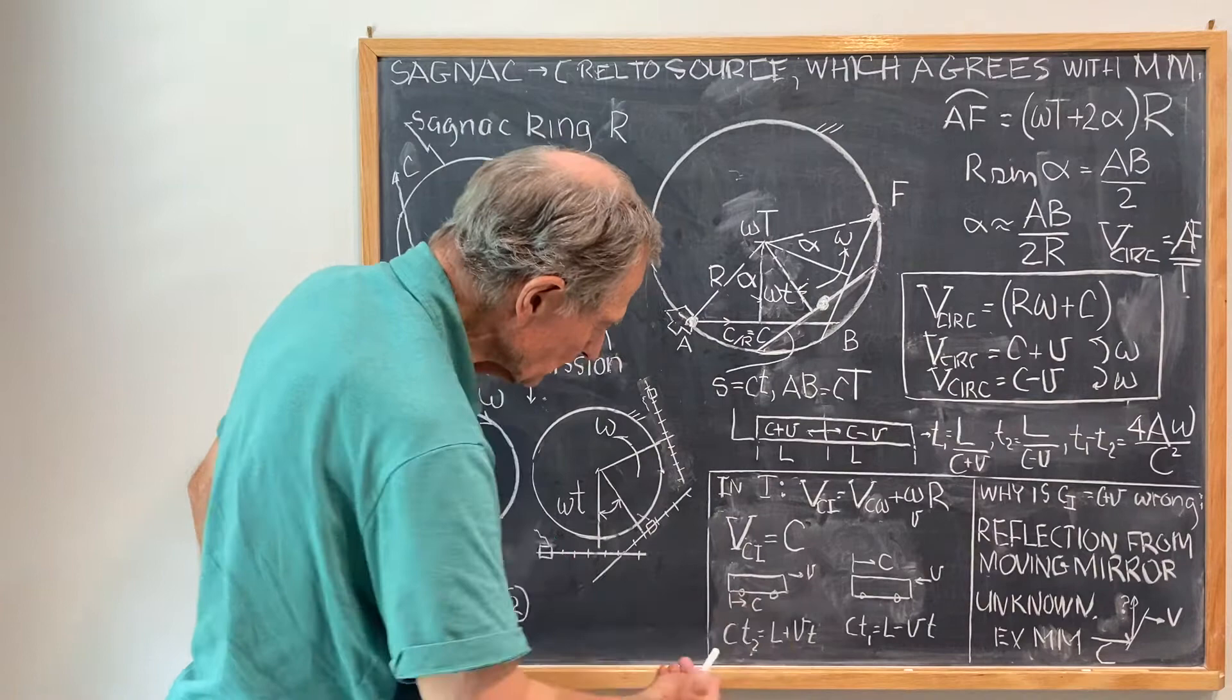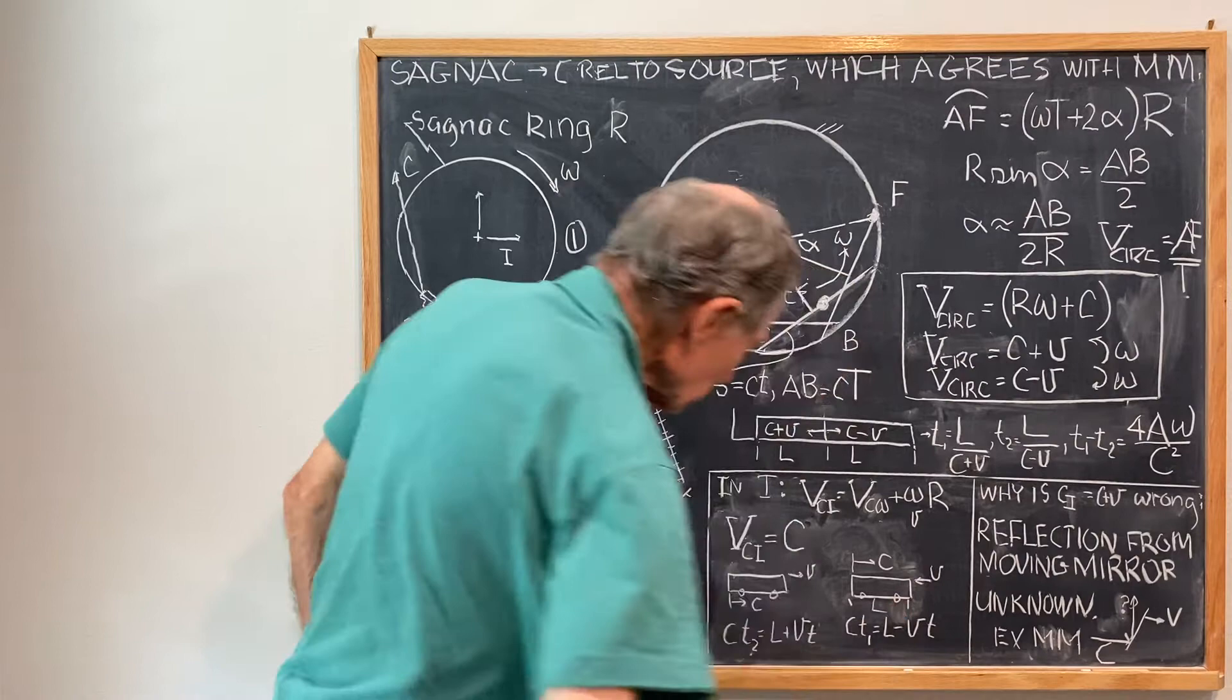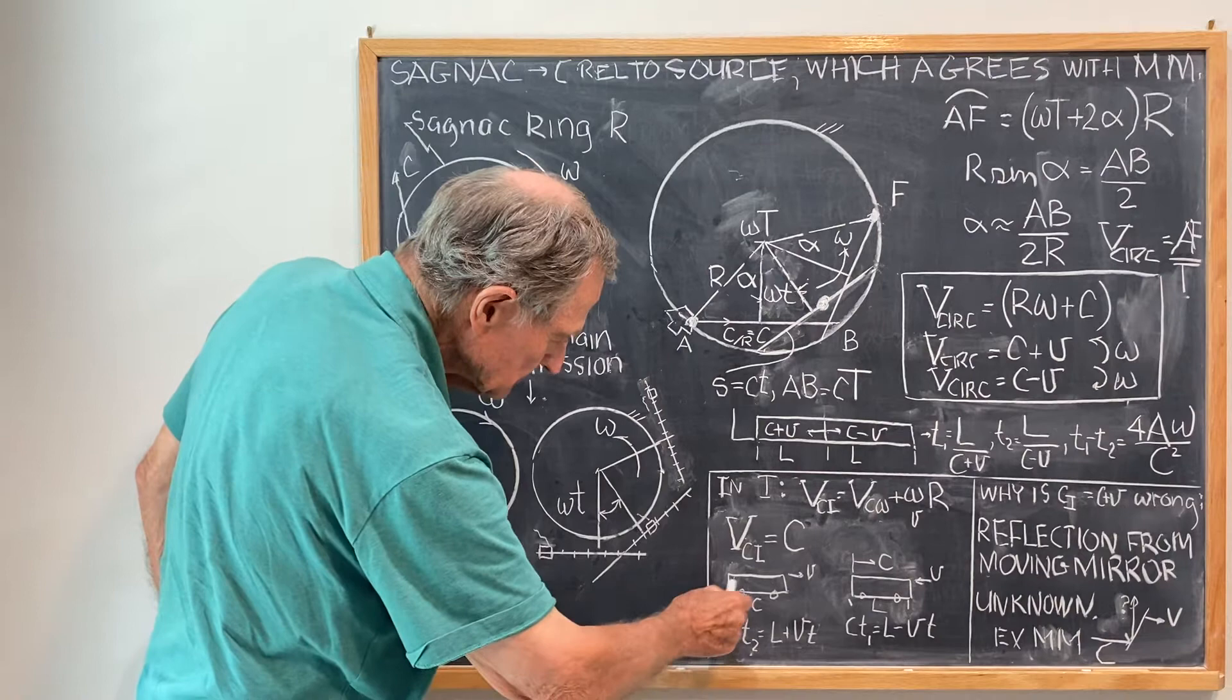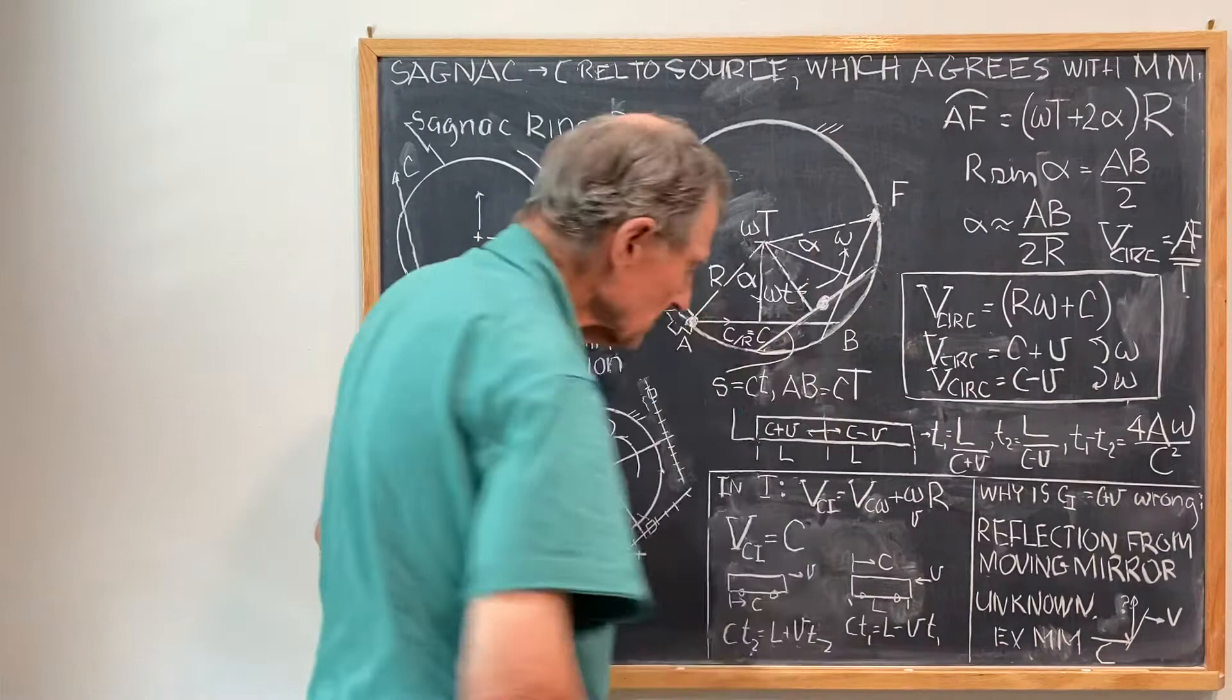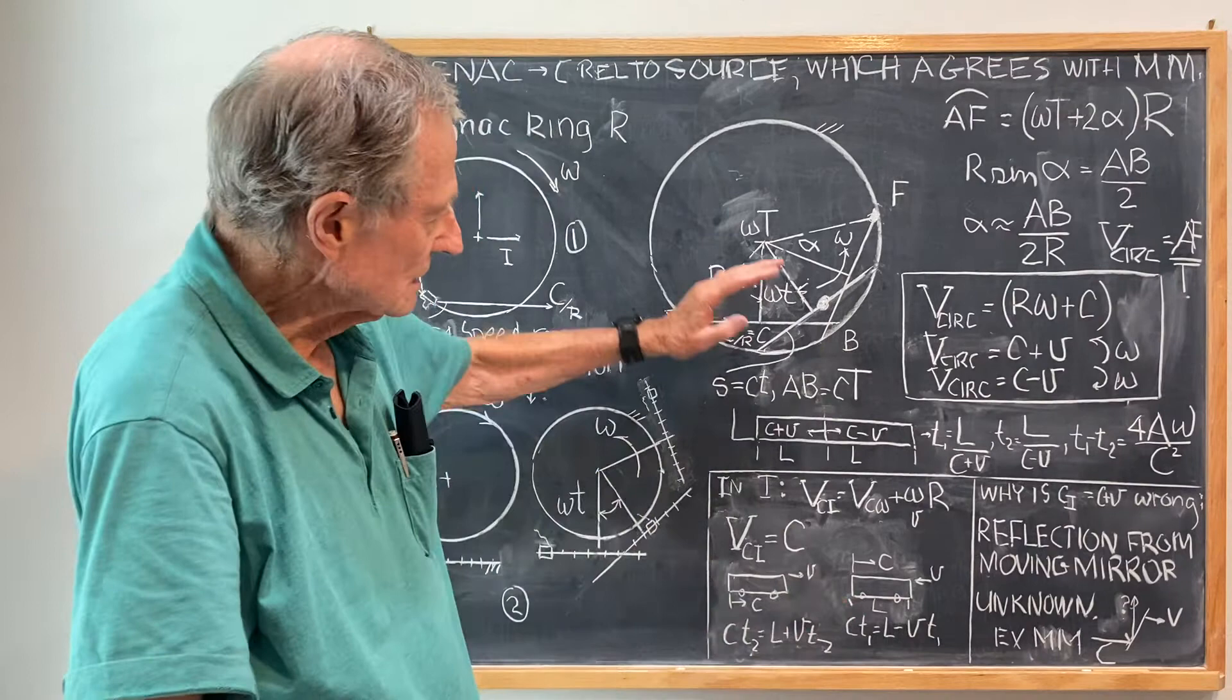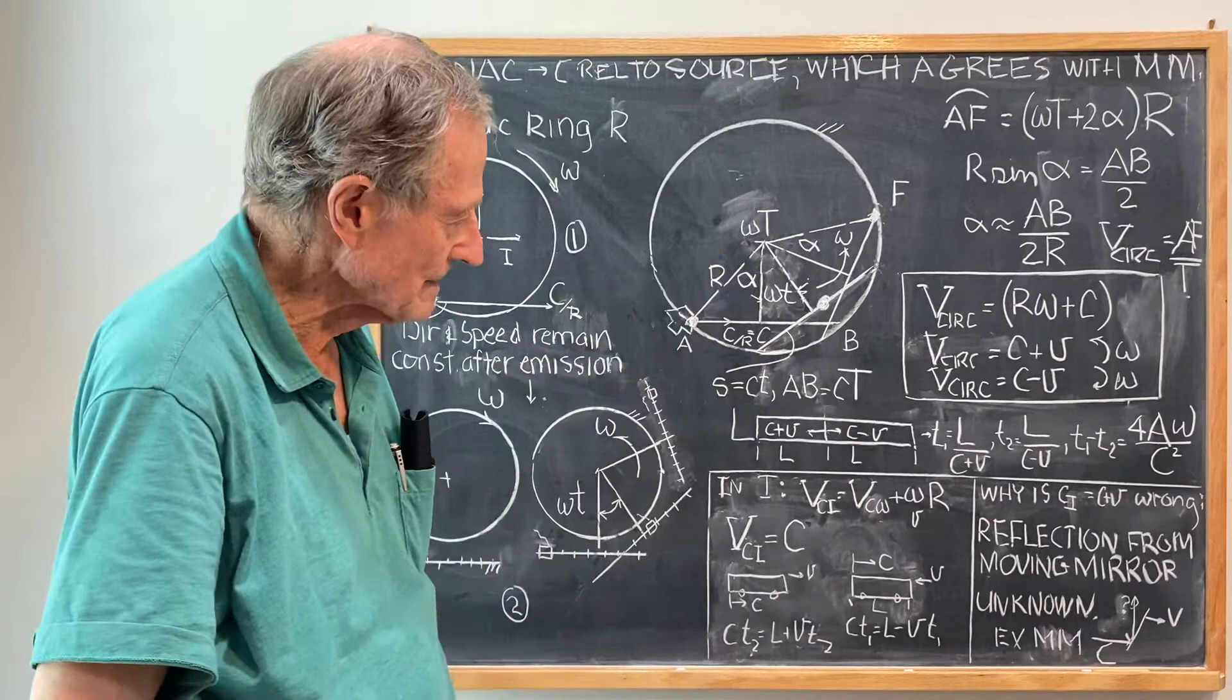And then if you do the same calculation in the two arms of the ring, imagine flattened out where L is the circumference, then in this case here you have that CT2 is equal to L plus VT2, and CT1 is equal to L minus VT1. And you get, so T1 minus T2 is exactly, so the calculation in the inertial frame gives you the same result as the calculation in the rotating frame.